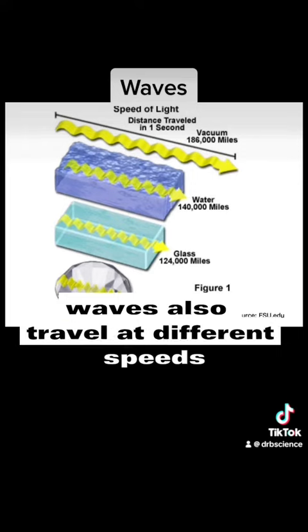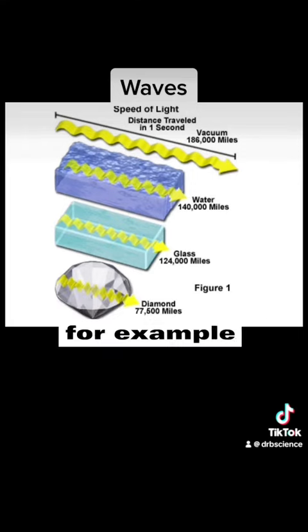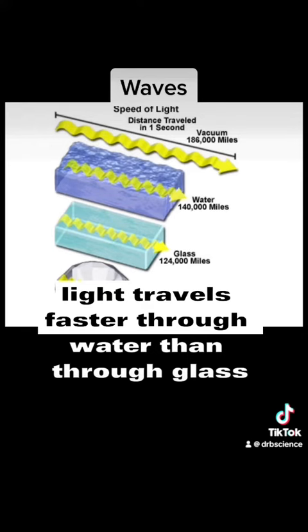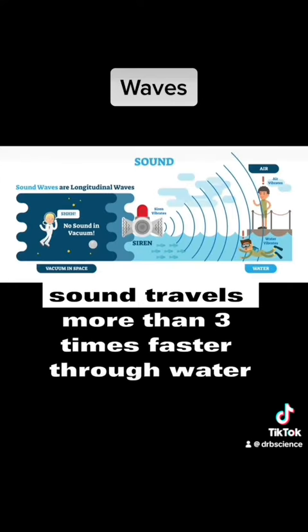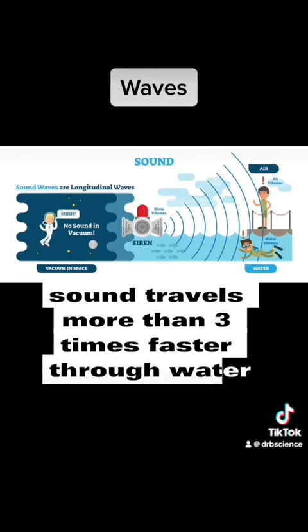Waves also travel at different speeds through different materials. For example, light travels faster through water than through glass. Sound travels more than three times faster through water than through air.